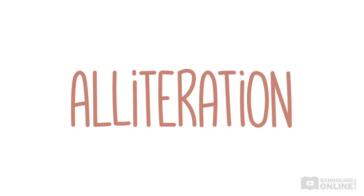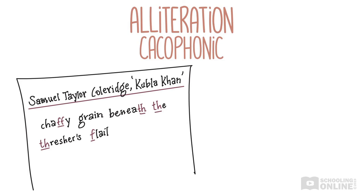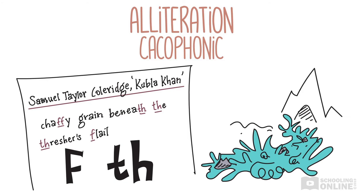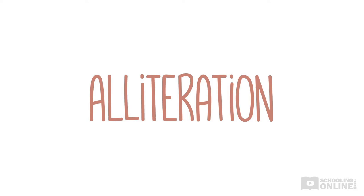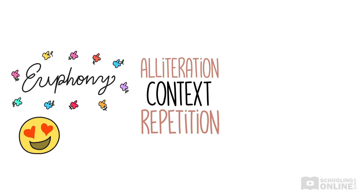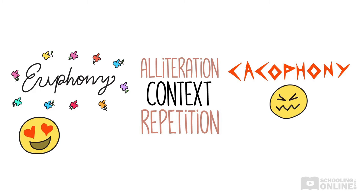Alliteration, however, doesn't always sound nice. Sometimes it's deliberately used to create a cacophonic effect, like in this line from the same poem: 'Chaffy grain beneath the thresh's flail.' The alliteration of the F and TH has a cacophonic effect. It creates a harsh, thrashing sound that perfectly describes the crash of the river against the caves. The effect of alliteration depends on its context. The repetition of some letters can create euphony, adding to the beauty or romance of the scene. The repetition of other sounds can create cacophony, which negatively portrays the subject of the poem.